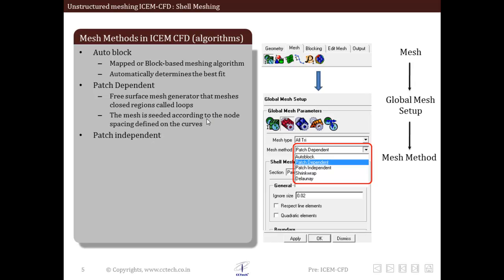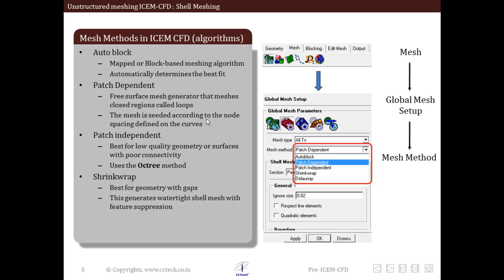Next is patch independent. This is the best algorithm for low-quality geometry or surfaces with poor connectivity. This uses the octree method. For details of the octree method, you can refer to the theory guide of ANSYS ICEM CFD. Then the next method is shrink wrap. This method is best for geometry with gaps. It generates a watertight shell mesh with feature separations.